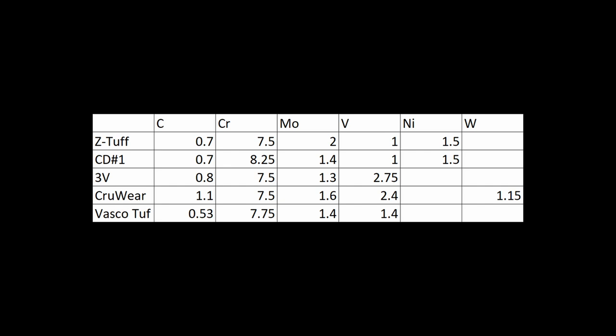And then the other unusual thing about these steels is the nickel addition. So the 1.5% nickel, that's similar to L6 tool steel, or there's 2% in 15N20. Those are two low-alloy tool steels that are used in knives pretty frequently. But nickel additions are not used that much in high-alloy tool steels. I'm not sure all the reasons why, but it is supposed to increase toughness, and maybe that's one of the reasons why Z-Tuff and CD#1 are so tough.